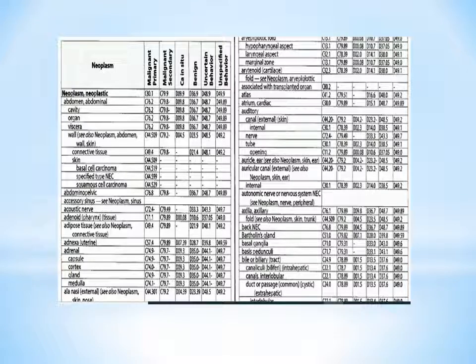As I have already discussed, the ICD-10 book is divided into two parts. The first one is the alphabetic index and the second one is the tabular list. The alphabetic index again consists of four sections — the details about all four sections I have already discussed in another video, so if you haven't watched that, please watch it. In this video I will be doing how to take a code from the table of neoplasm, which is one among the four sections of the alphabetic index.